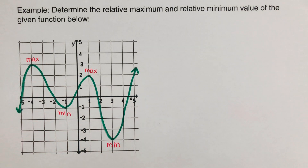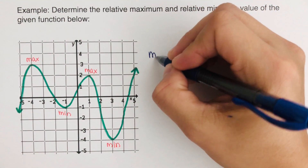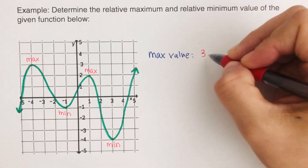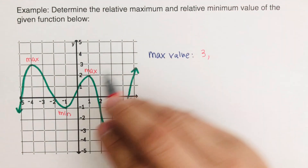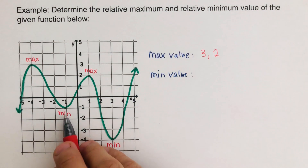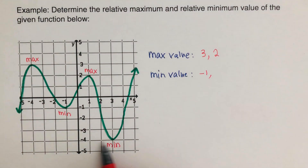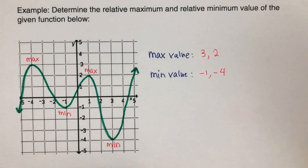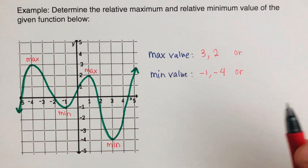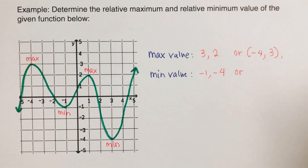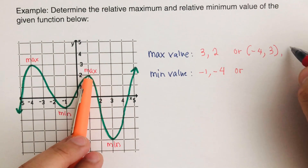There are two ways to represent the maximum value: either by the y value or the point. The maximum value here is 2. For the minimum values, there are two — negative 1 and negative 4. We are talking about the y values. The other notation uses points: the first maximum value is at point (negative 4, 3), and the other maximum value is at point (1, 2).